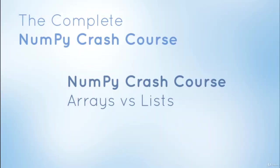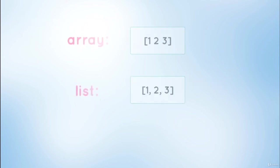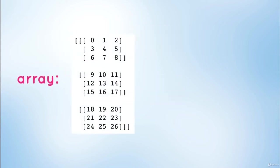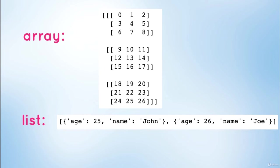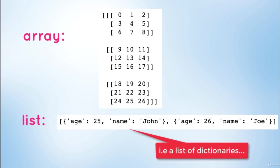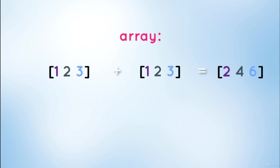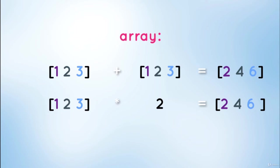Welcome to lesson one of the NumPy crash course. Let us first discuss why we should use NumPy arrays instead of Python lists. At first glance, arrays appear to be very similar to Python lists, although they are more convenient when dealing with numeric operations. A one-dimensional or multi-dimensional array consists of a homogeneous grid of values all of the same type, whereas lists are heterogeneous and generally contain elements of different types. NumPy arrays allow vectorized operations such as element-wise addition and multiplication, which is a lot more concise than how it would be done with Python lists.